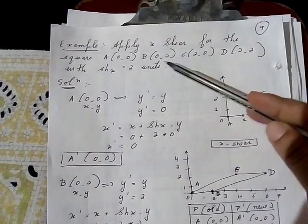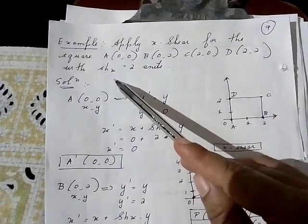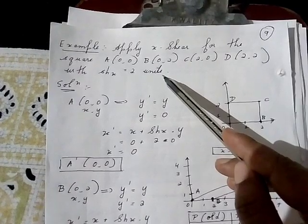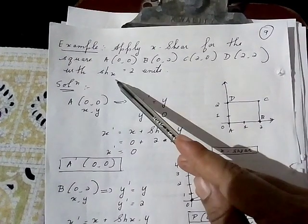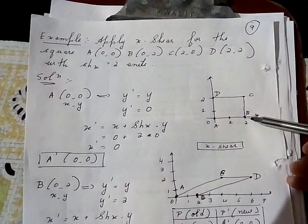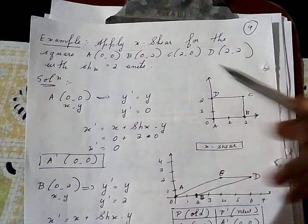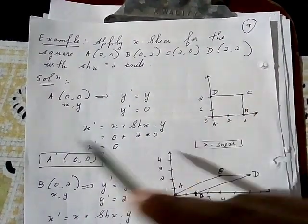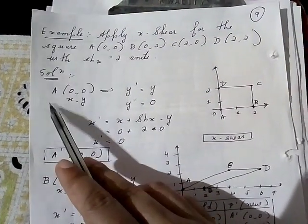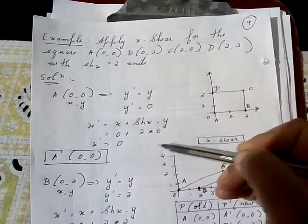Let us see an example for x-shear. Apply x-shear for the square: A(0,0), B(0,2), C(2,0), D(2,2), with shx = 2. You have to find the new coordinates based on the x-shear formula. The old coordinates are already placed: A is (0,0), B is (0,2), C is (2,0), and D is (2,2).